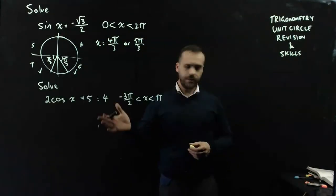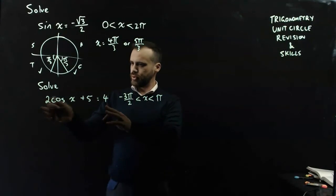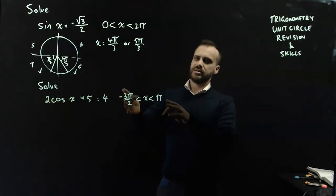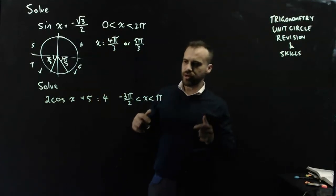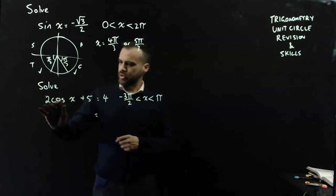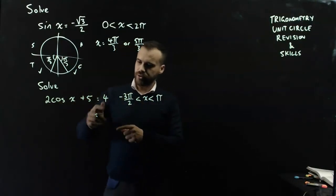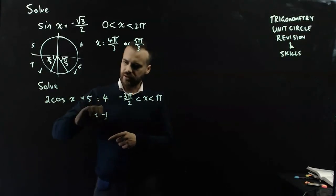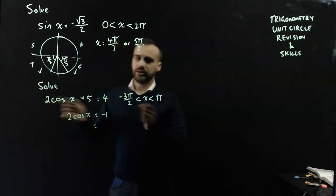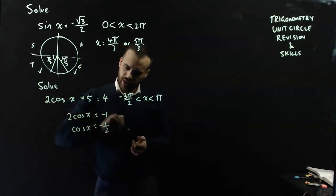We can make it a little more complex. So, maybe something like this. Now, two challenges. One, we need to rearrange this so it's a little more solvable, and two, our domain is a little bit different. It's not 0 to 2π. Let's rearrange this. 2 cos x plus 5 equals 4. I can subtract 5 from both sides, so 4 minus 5 is negative 1. And now I can divide both sides by 2, and that'll give me cos x equals negative 1 half.